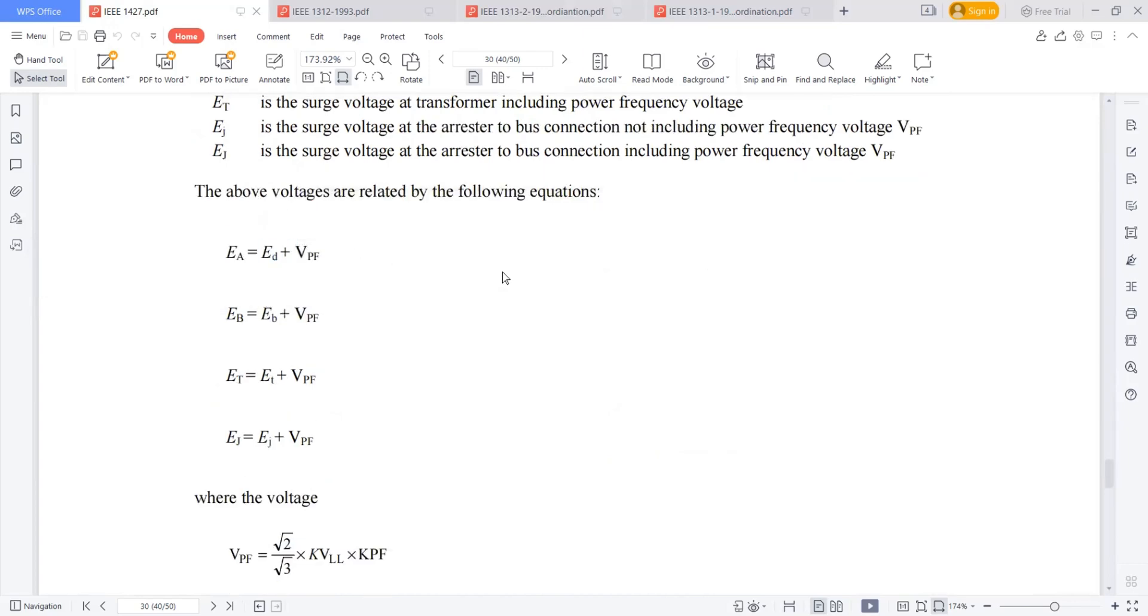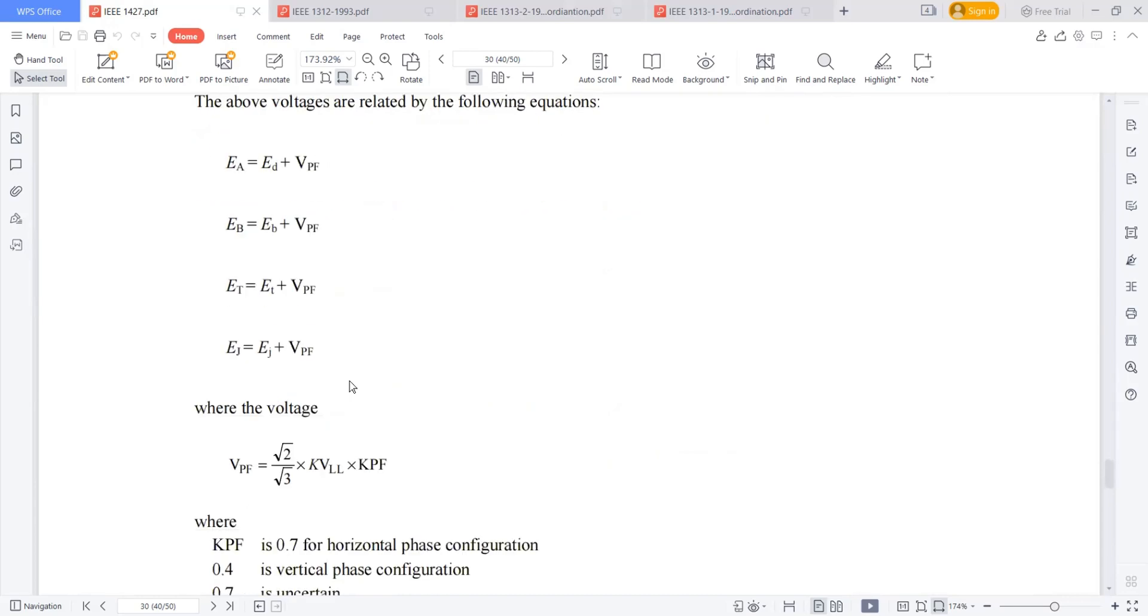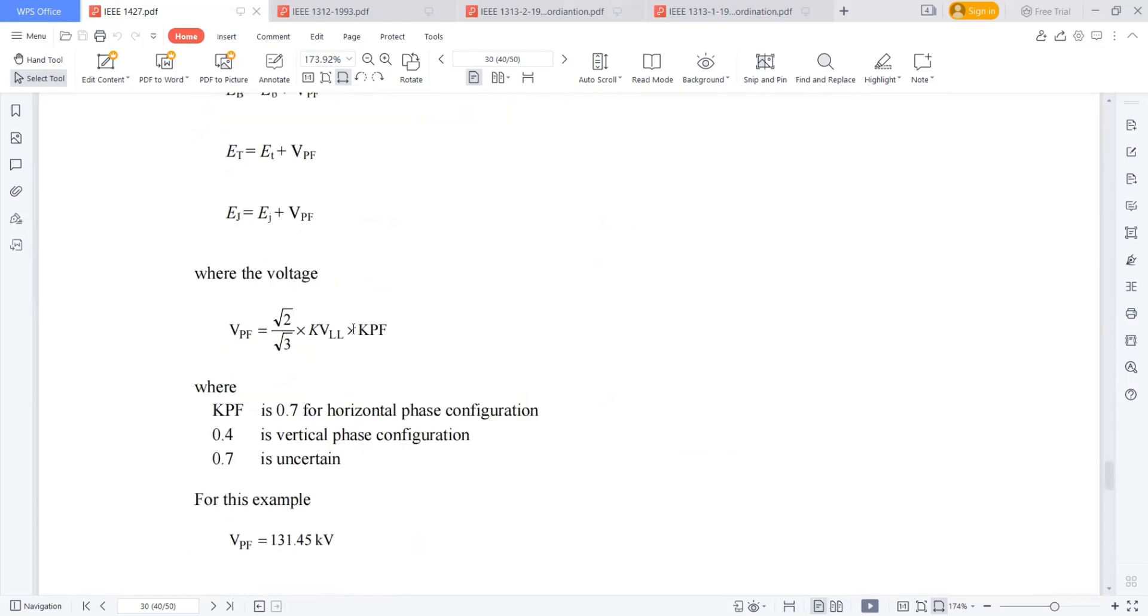VPF, generally you will get from the power frequency withstand voltage. What is the power frequency withstand voltage? Line to line voltage into root 2 by root 3. And again, it depends upon the type of the configuration. If horizontal configuration, mentioned 0.7, if it is vertical 0.4. So the VPF, the power frequency withstand voltage of 220 kV to 230 kV line is 131.45 kV.